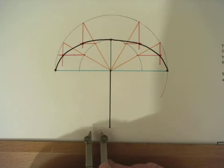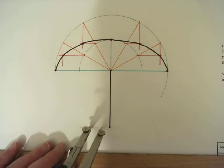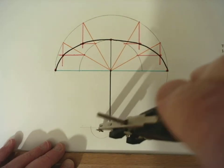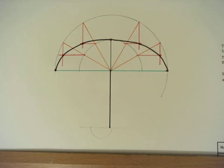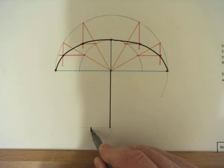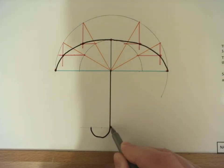And you can use your compass to draw a little semicircle for the bottom of our umbrella. I'm just going to go over that again.